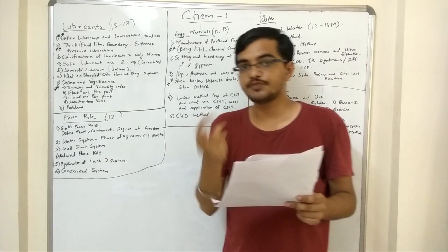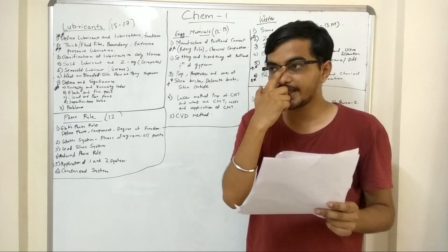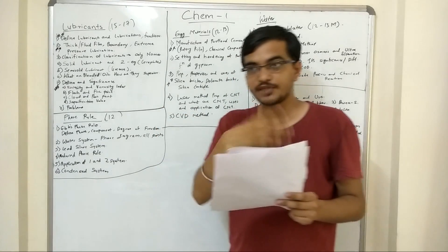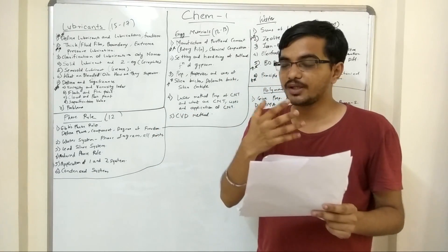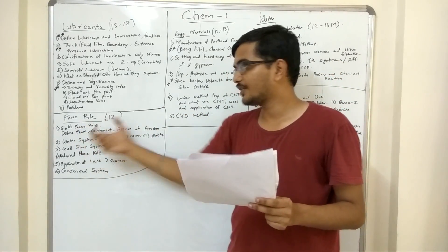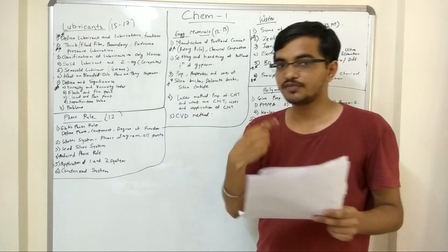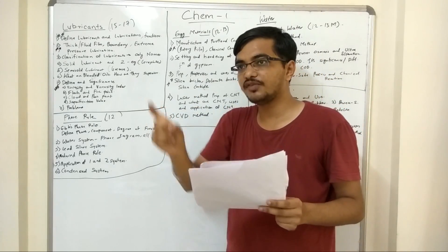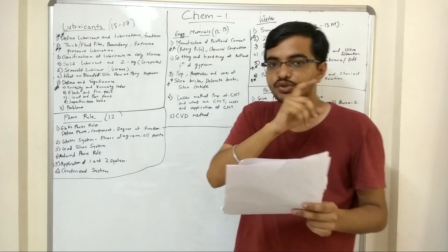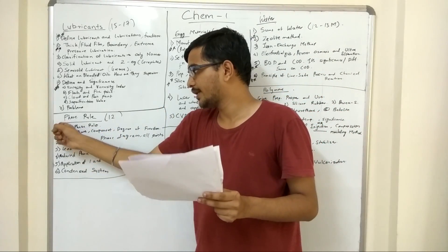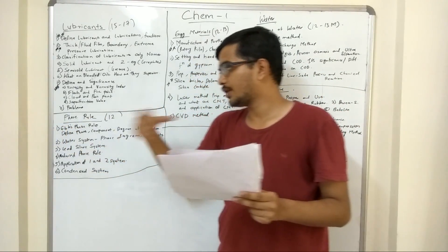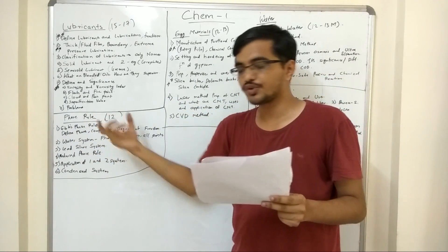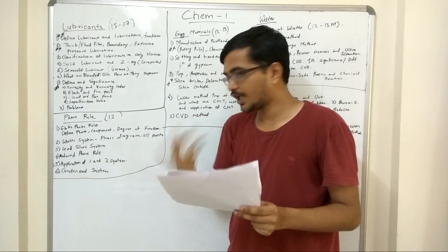If it is for 6 marks, you have to write at least 4 points for each, whereas for 3 marks you can write 1-2 points. Each definition can be 1 mark, so the exact definition can fetch you directly 1 mark. Also mention what is Gibbs phase rule - you have to give that formula.